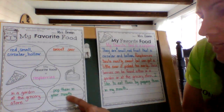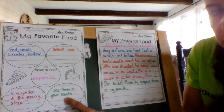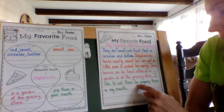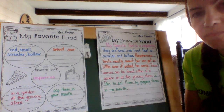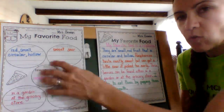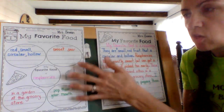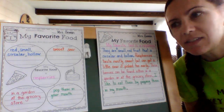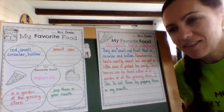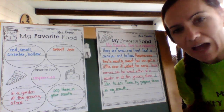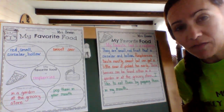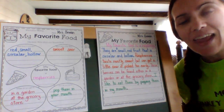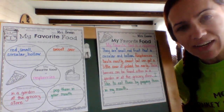The last one says how do you eat it — pop them in your mouth. I need to make that a complete sentence: I like to eat them by popping them in my mouth. Once you've done the organizer, it's pretty easy to just make those circles into complete sentences. Don't forget to have capital letters, ending punctuation, and finger spaces so that it's easy to read.